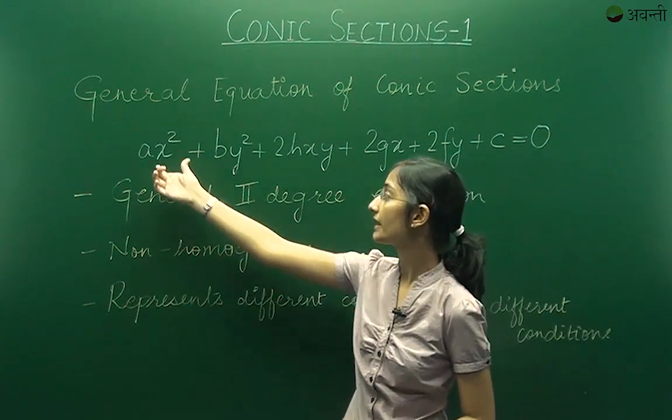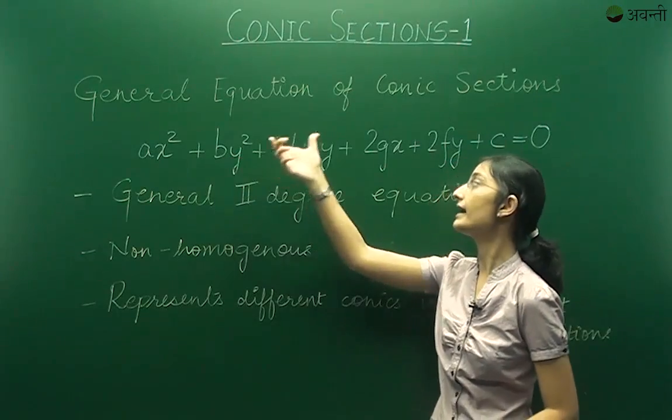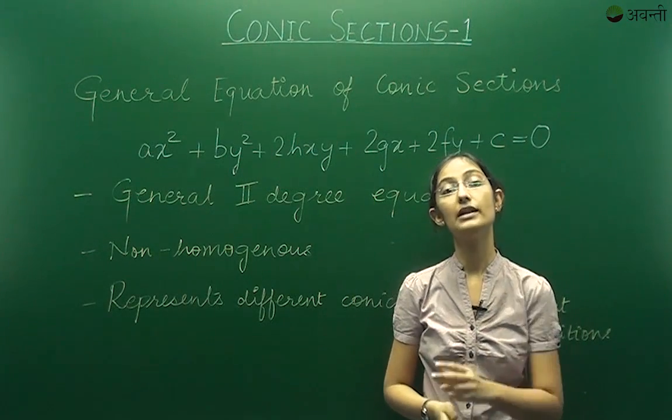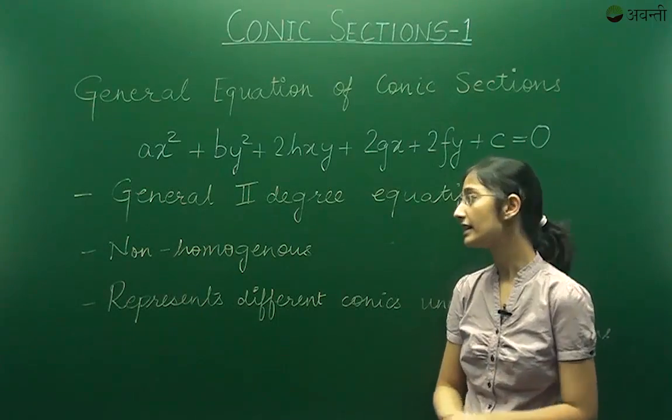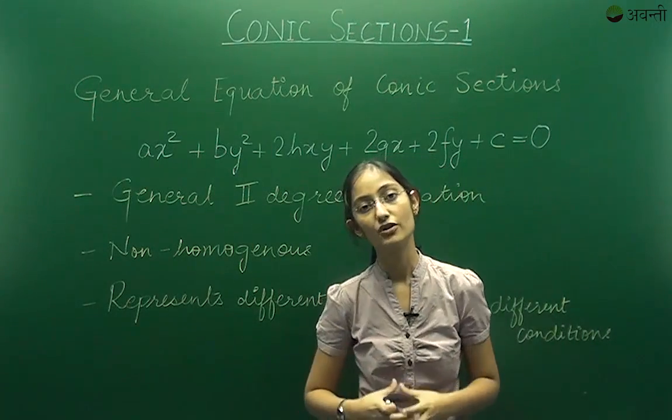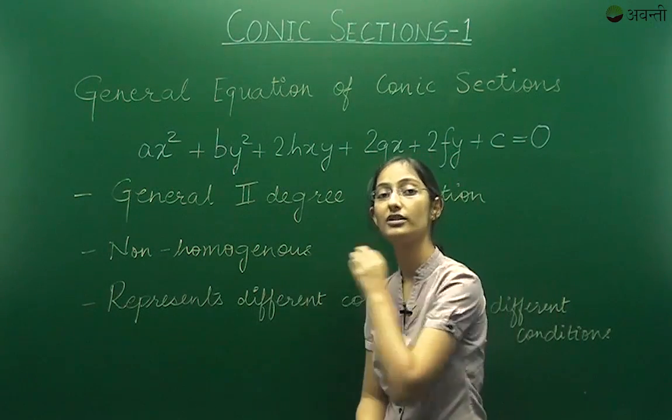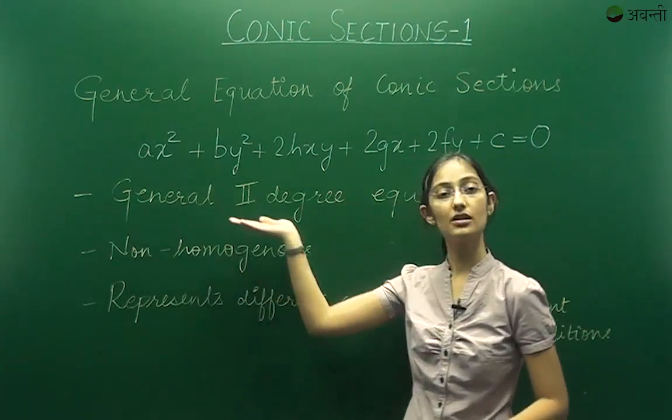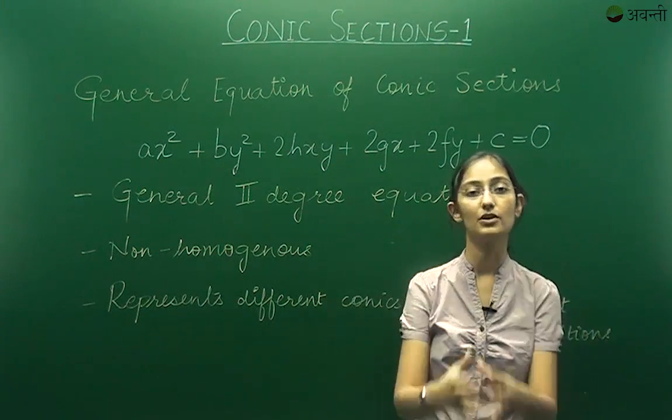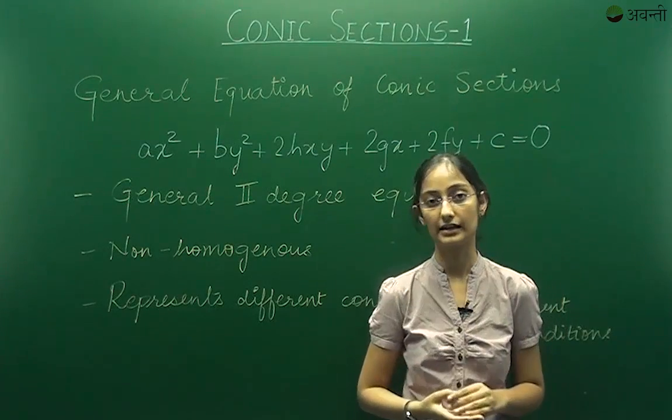Now why is it called a second degree equation? You can see that I have terms of x square, y square and xy over here which are all second degree terms in x and y. Now you can see that there is no other possible combination of x and y that I can add to this term so that it remains second degree. That is why I will call this a general equation because we have considered all possible combinations so that it remains a second degree equation.